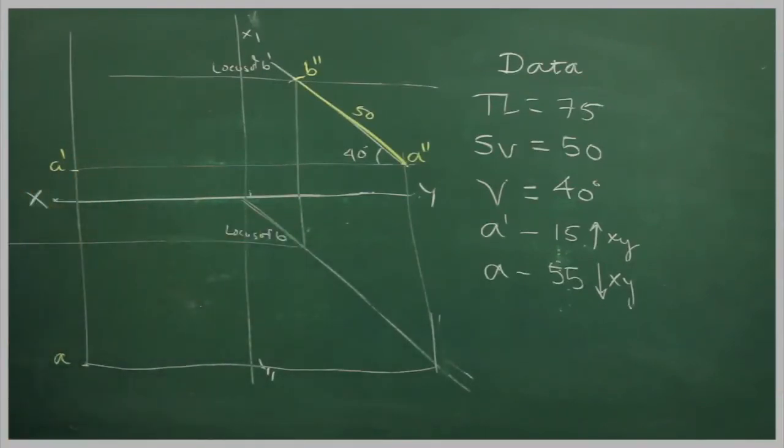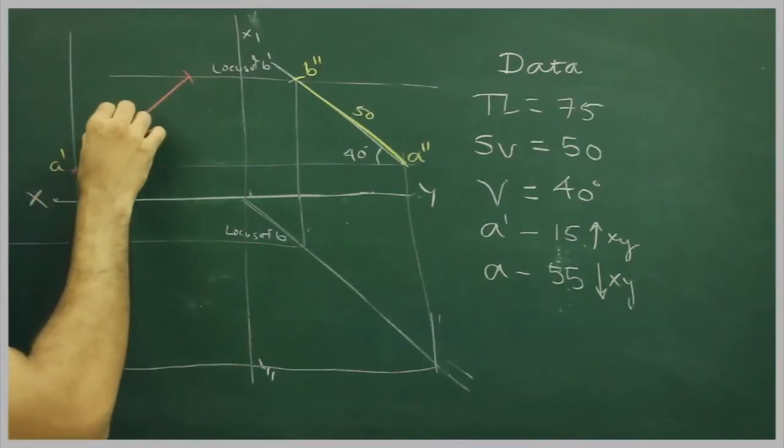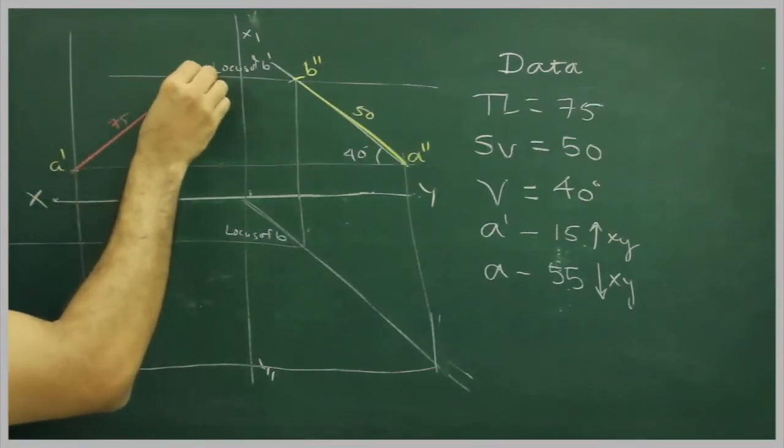Now we have true length, so from A dash I can cut true length, that is 75. So this would be B one dash.